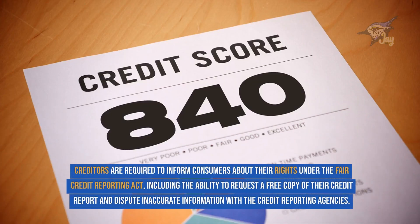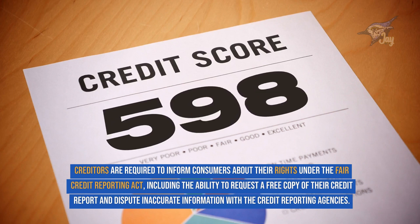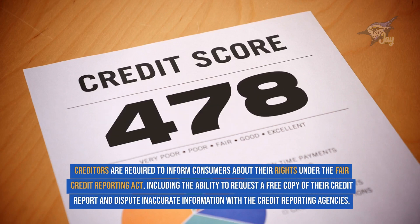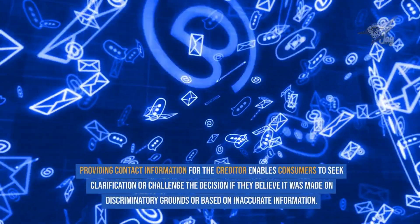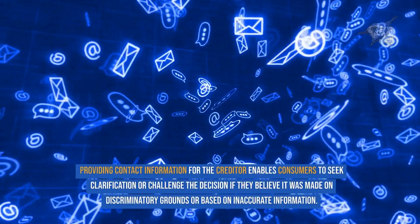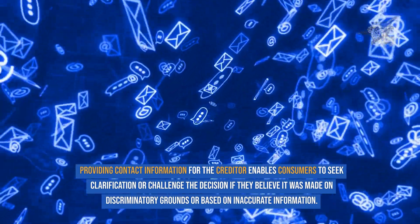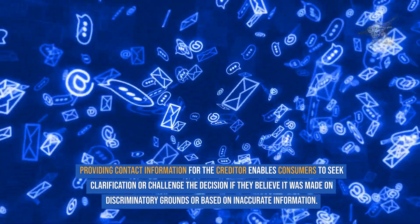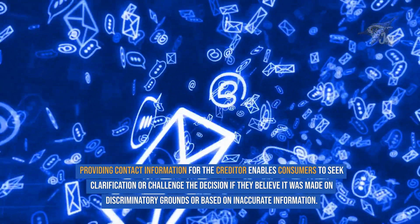Creditors are required to inform consumers about their rights under the Fair Credit Reporting Act, including the ability to request a free copy of their credit report and dispute inaccurate information with the credit reporting agencies. Providing contact information for the creditor enables consumers to seek clarification or challenge the decision if they believe it was made on discriminatory grounds or based on inaccurate information.